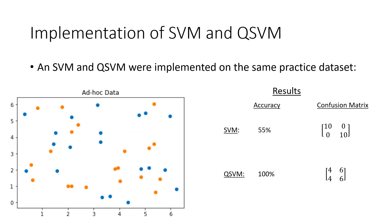We implemented the first QSVM method in Qiskit alongside an SVM on the same dataset. As you can see, the QSVM is more accurate. This is unsurprising given the way the data were generated.